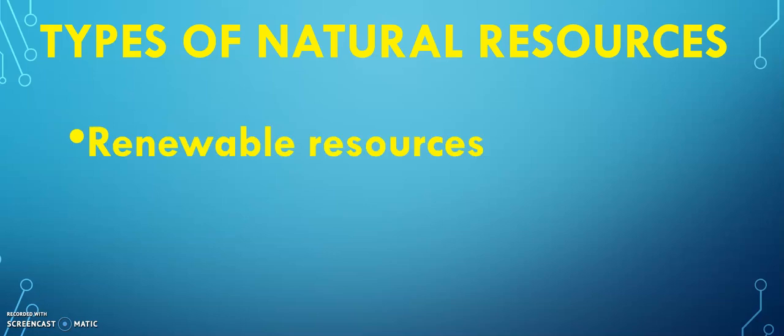We have types of natural resources. First is renewable resources. Renewable resources can be replaced or replenished easily. Examples are plants, animals, wind, solar, geothermal, water, and many more. Plants are replaced by new ones after each harvest. Animals have the capacity to reproduce and are replaced when young animals are born, and so on.